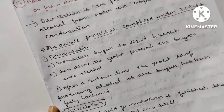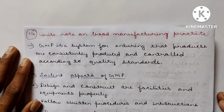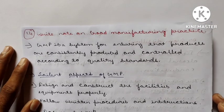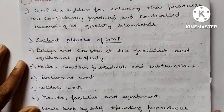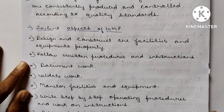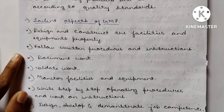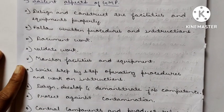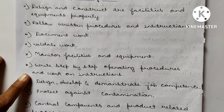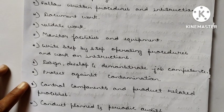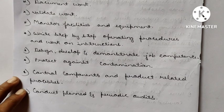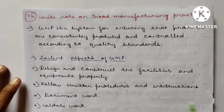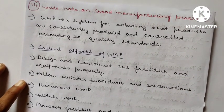Question 14: Write a note on Good Manufacturing Practice (GMP). GMP is a system for ensuring that products are consistently produced and controlled according to quality standards. Key features include: design and construct facilities and equipment properly; follow written procedures and instructions; document work; validate work; monitor facilities and equipment; write step-by-step operating procedures; demonstrate job competence; protect against contamination; control components and product-related processes; and conduct planned and periodic audits.